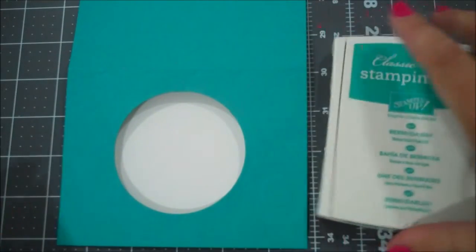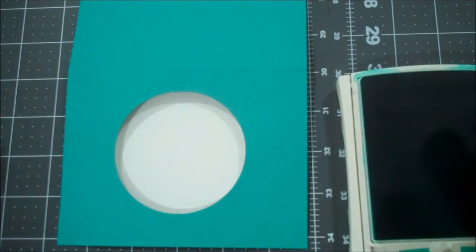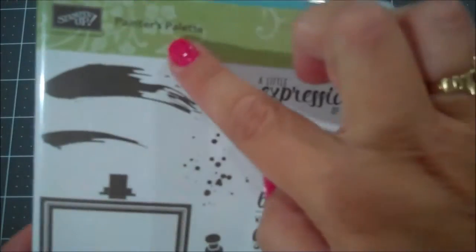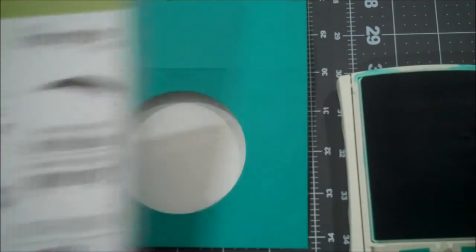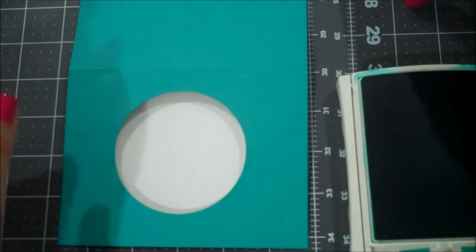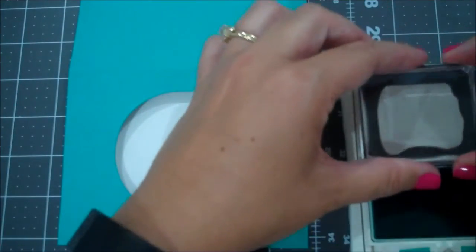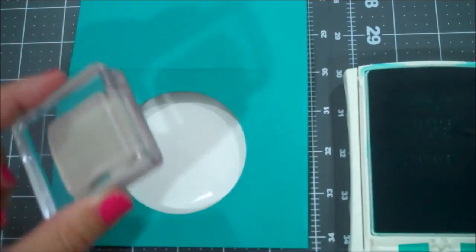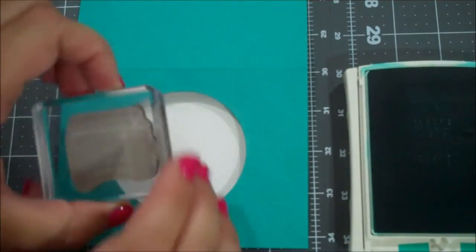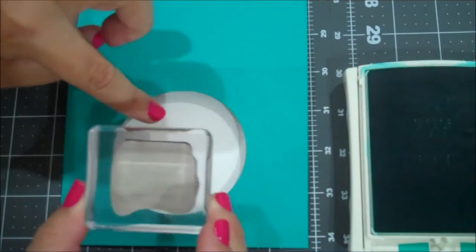So I'm going to pull out my Bermuda Bay and I am using the stamp set painter's palette. And I'm using the sentiment, your idea to have a birthday was simply a stroke of genius. And I'm going to ink up my stamp and I'm going to do my best here with this camera. You could have stamped first, which I could have done and probably should have for the video before I put the window sheet down so you can double check your alignment.